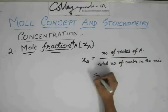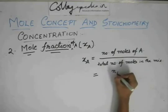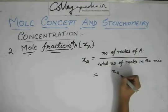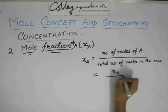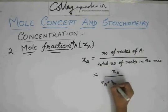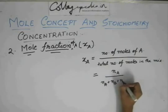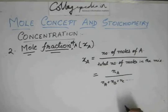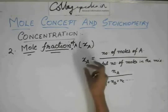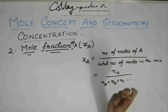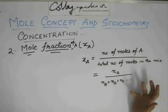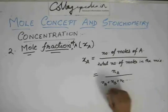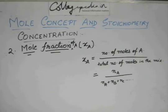Or you can denote it mathematically by NA where NA stands for the number of moles of A divided by NA plus NB plus NC and so on, till it continues till how many substances are there. So this mole fraction is nothing but how many parts of A are present in the total mixture.